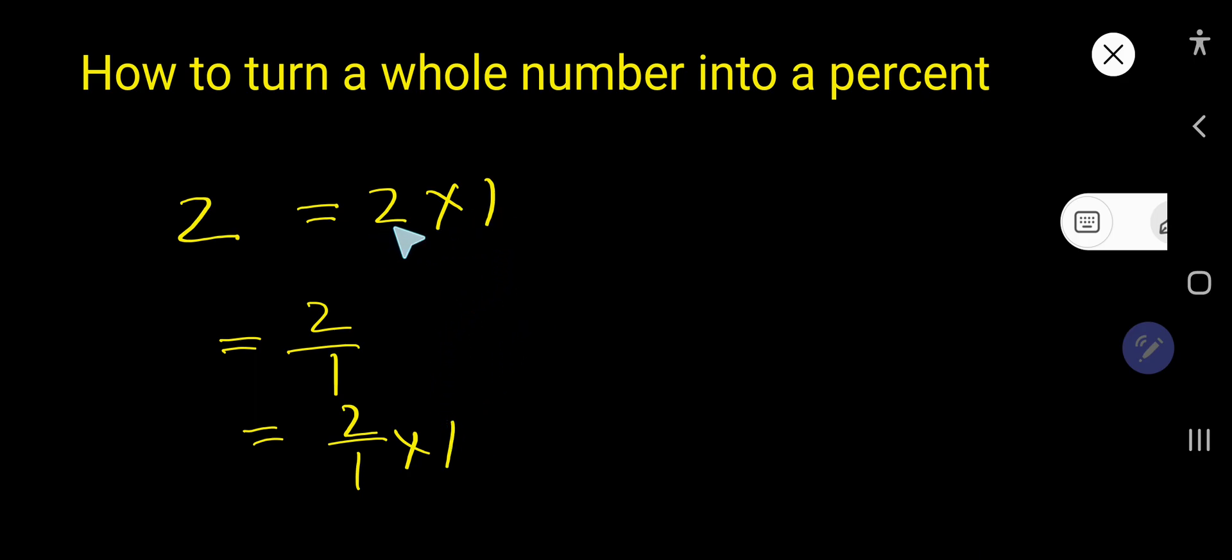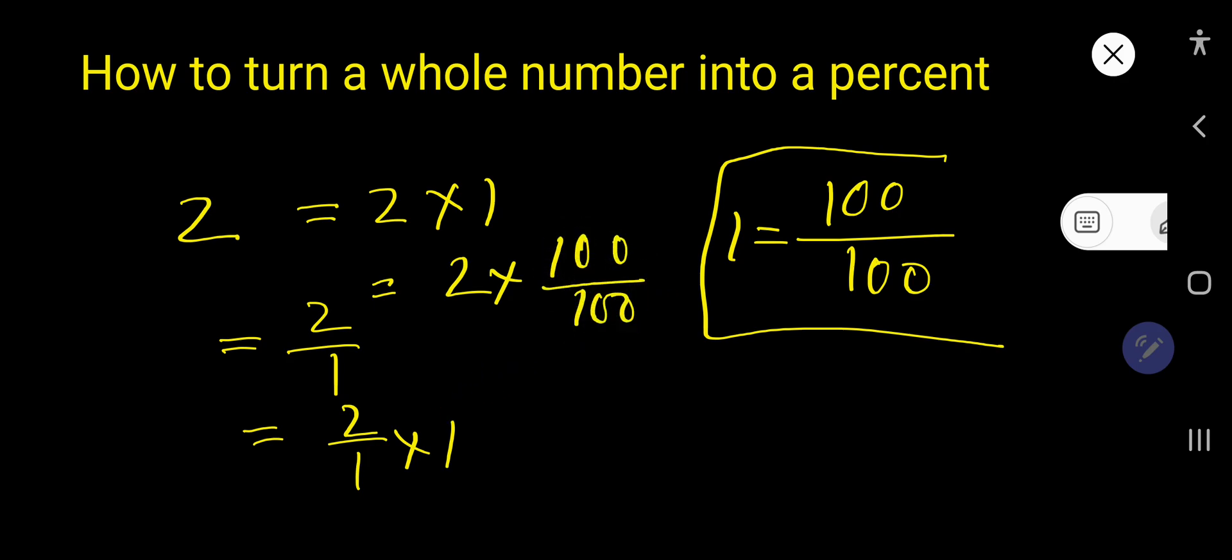So look, if I write these 2 as 2 times 1, for 1 we can write... look, we can consider a fraction whose numerator is 100 and denominator is 100, that will be equal to 1. So instead of this 1 we can place 100 over 100.